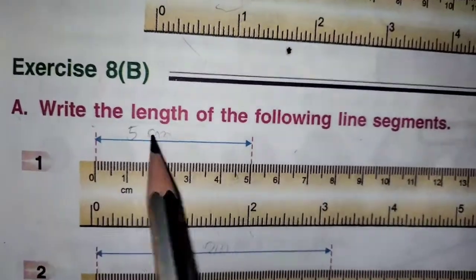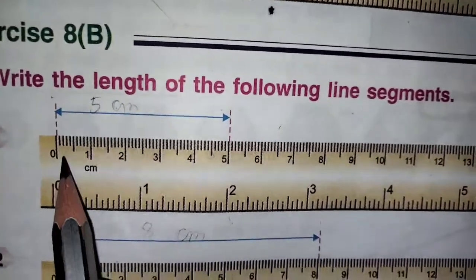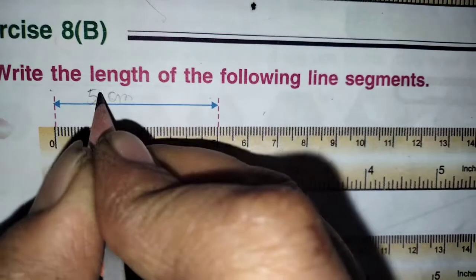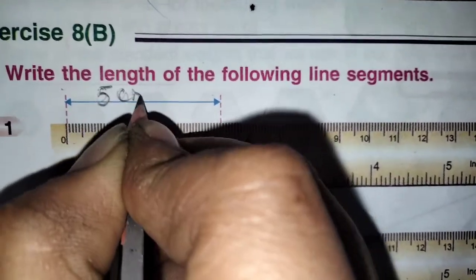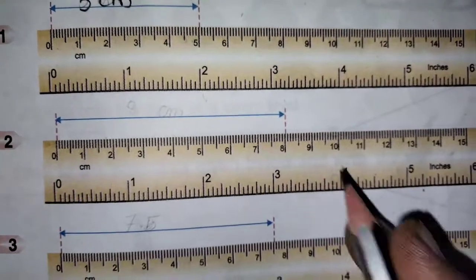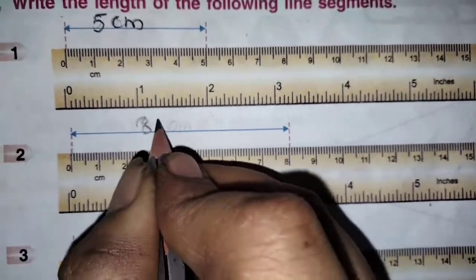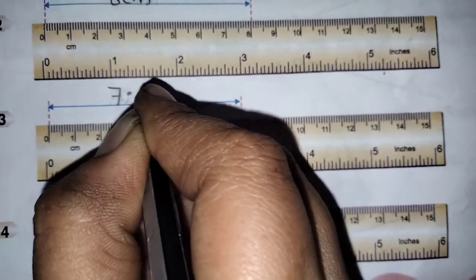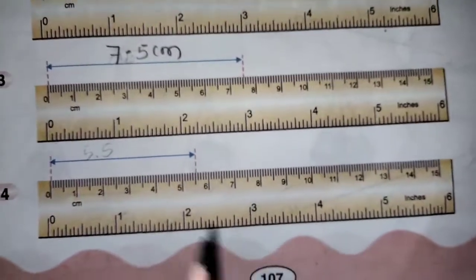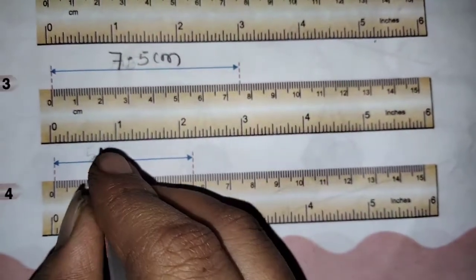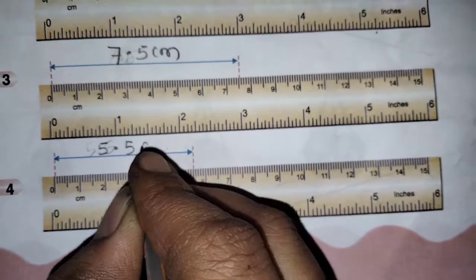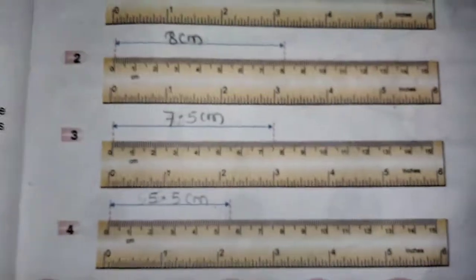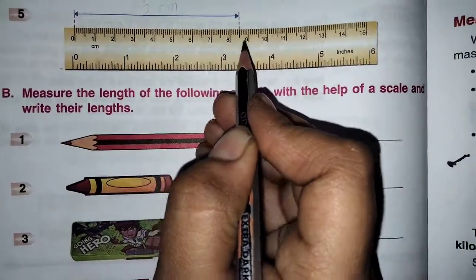I hope you have to draw this, so let us go for the exercise number 8B. Write the length of the following line segment. 0 to 5 it is, then the length is 5 cm. This is 8 cm. Now third one, here 7 it is 7.5. Now next it is 5.5. This is 8.5. This all you have to write in a notebook.